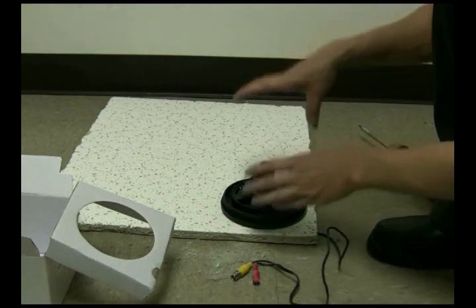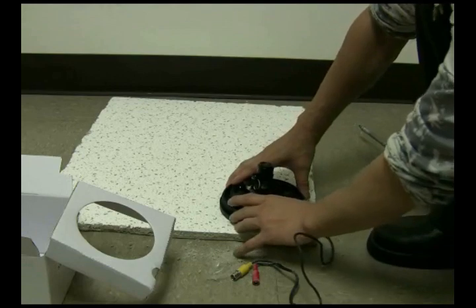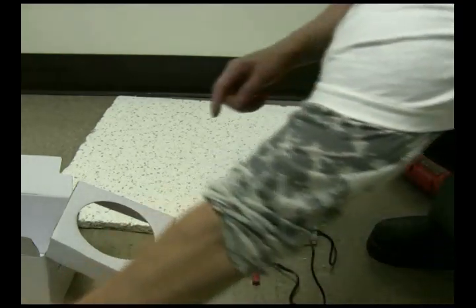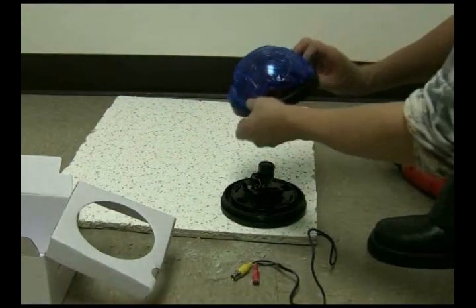Once you put the screws, you put it in, and then you twist lock so it can lock in place. After when it's locked, you can put the bubble back again.